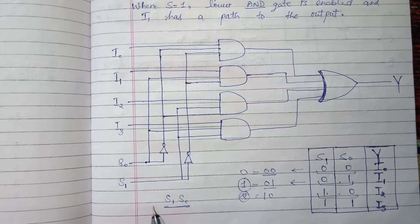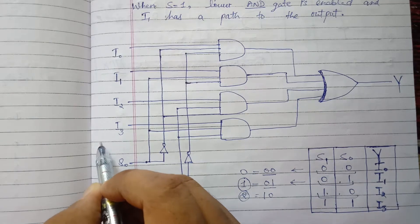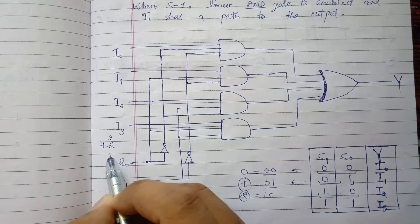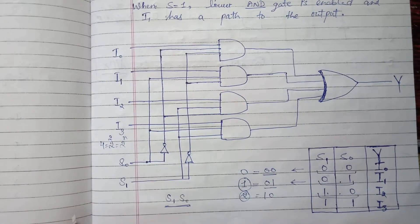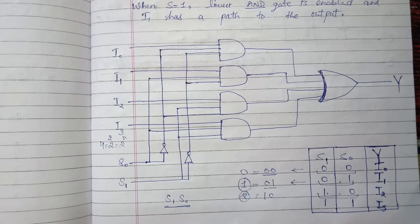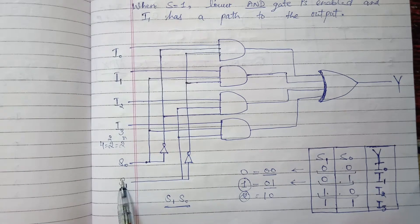We are giving four inputs I0, I1, I2, I3, and 4 equals 2^2, so n equals 2, meaning we give 2 select inputs S0 and S1. The bit combination of these two select inputs will decide which one of these four inputs will be the output — the bit combination corresponds to the minterm of that input.